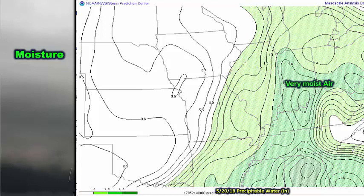Another way to monitor moisture in the atmosphere is through dew points. Typically, dew points in the 60s or 70s are needed in our area, but in the fall or spring months a dew point as low as 50 or so can also do the job.